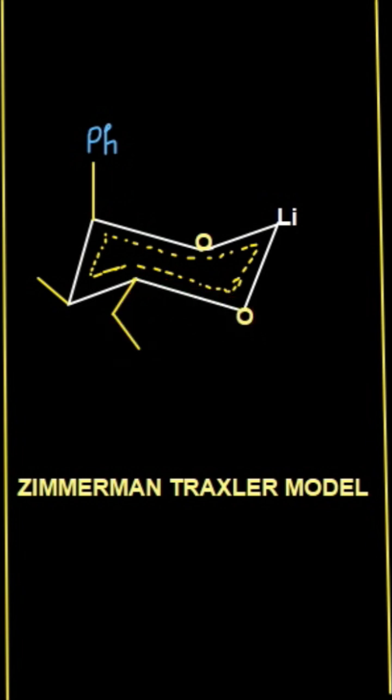You can see this phenyl is the bulky group, and in this carbonyl compound, this is the bulky group. So you have to look at the orientation of these two groups.